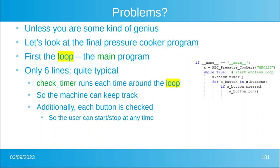You see it's only six lines, and that's quite typical for something like this. GUIs, for example, are typically one or two lines. Check timer runs each time around the loop — that's important because we don't want to set the food on fire. We want to make sure it turns off on time so the machine can keep track of how long it's been cooking. Additionally, each time around the loop, the buttons are checked because you never know when the user is going to touch a button, and they could start or stop the process at any time.